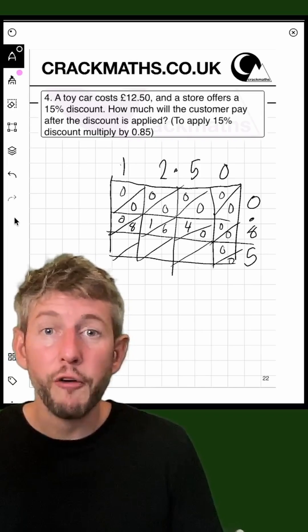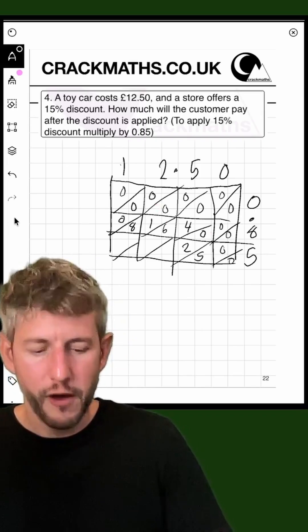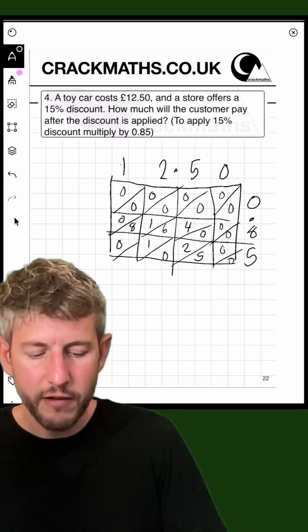On this bottom bit here, I've got 5 times 5, which is 25. Then I've got 2 times 5, which is 10. And then I've got 1 times 5, which is 05.